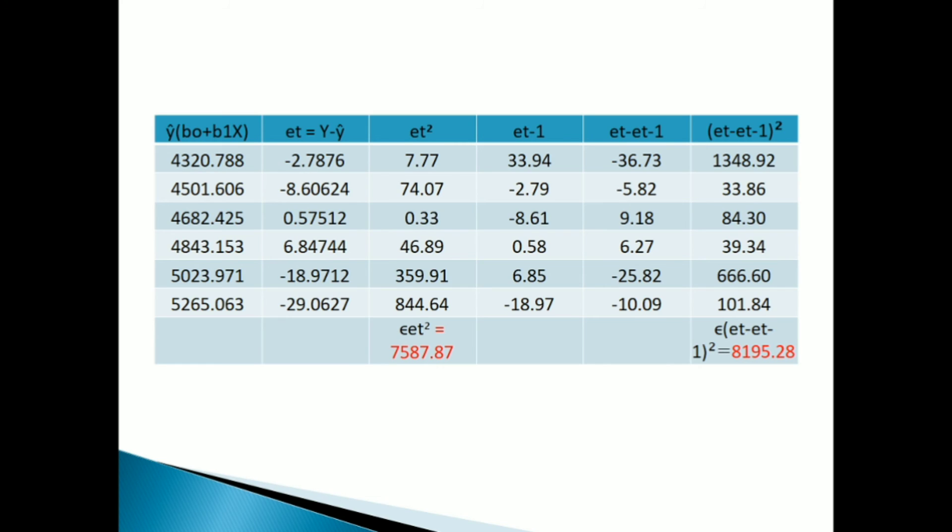Finally, you just do the summation for ET squared and ET minus ET minus 1 the whole squared. Summation ET squared equals 7587.87, and ET minus ET minus 1 the whole squared answer is 8195.28.